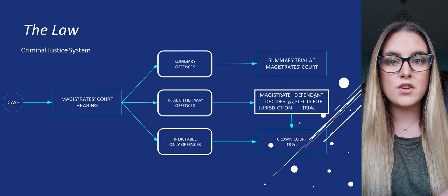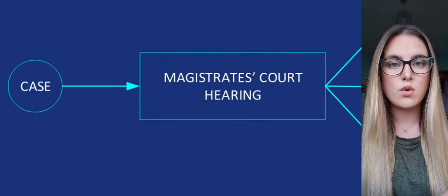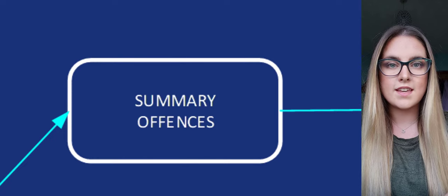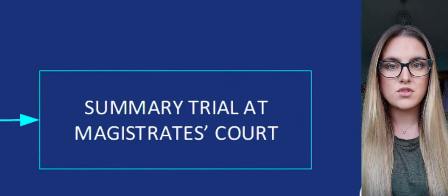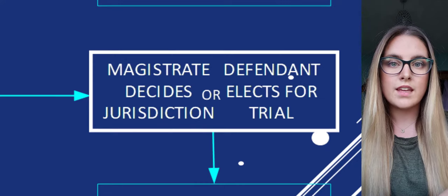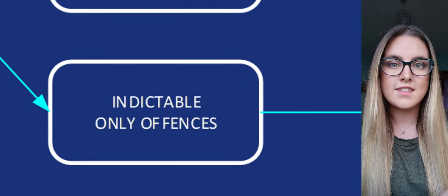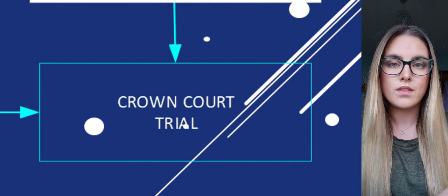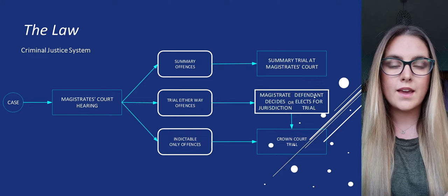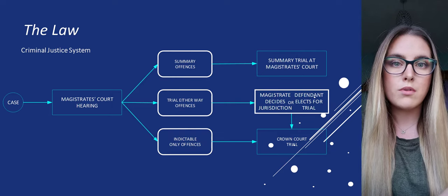Displayed on screen is the flow used when deciding which court a criminal case should be trialled in. The case begins its journey within the Magistrates Court for a hearing, and it is then decided which category the offence fits into. If it is a summary offence, a less serious case, there will be a summary trial held within the Magistrates Court. For either way offences, the Magistrate will decide the jurisdiction or the defendant will elect for trial, and it will be trialled within the Magistrates or Crown Court. Indictable only offences are very serious cases and trial will be held within the Crown Court. Members of the judiciary in Magistrates Courts are not trained in practicing the law, but are volunteers within the community.